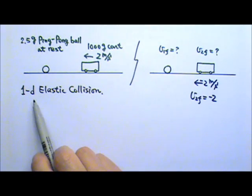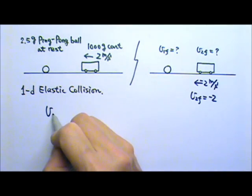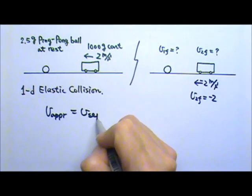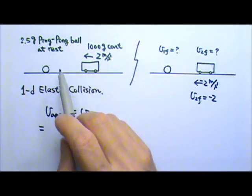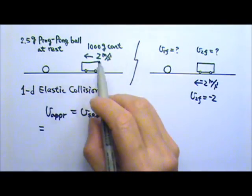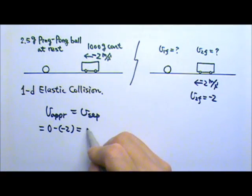Because it is a one-dimensional elastic collision, we can also use the approaching speed equals to the separating speed to find the V1F. The approaching speed is the difference in the velocities. The velocities are 0 and negative 2. So 0 minus negative 2, the approaching speed is 2, so the separating speed is also 2.